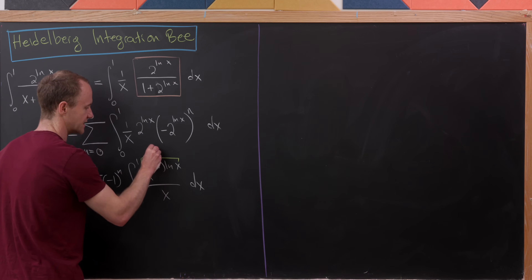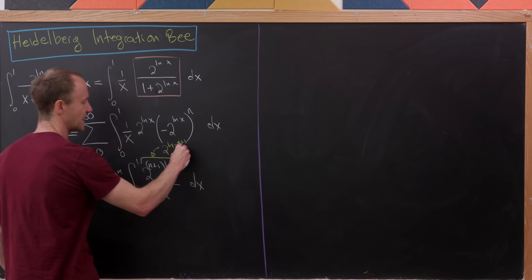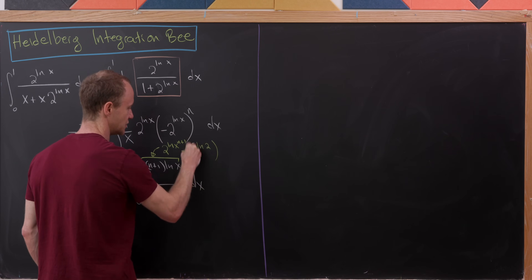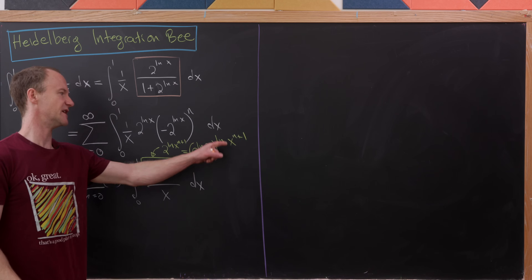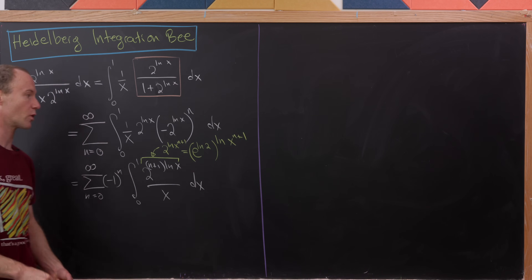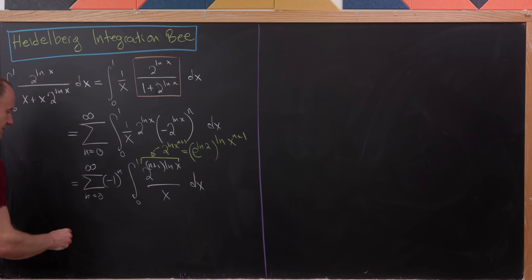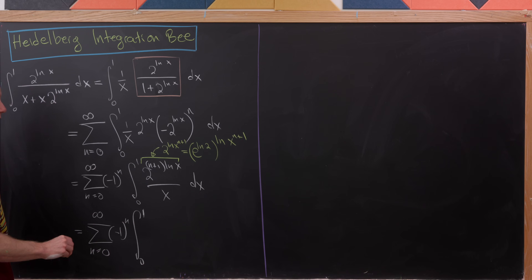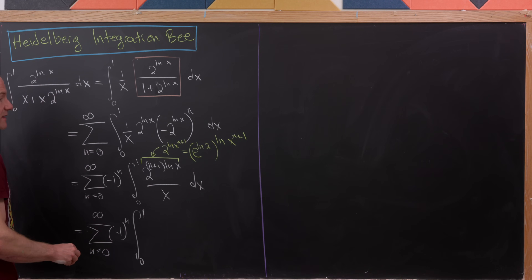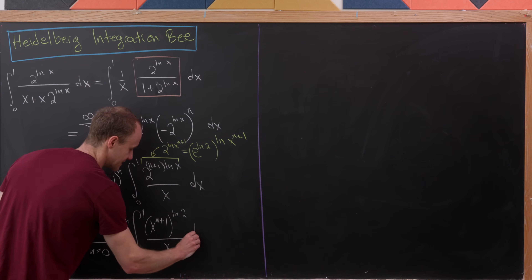Let's focus on the numerator of the integrand. This is 2 to the natural log of x, raised to the n plus 1. I can rewrite 2 as e to the natural log of 2, raised to the natural log of x to the n plus 1. Using the trick that we can switch the order of the exponents, that brings natural log of x to the n plus 1 inside and natural log of 2 outside. So we'll have e to the natural log of x to the n plus 1, which simply gives us x to the n plus 1, raised to the natural log of 2, all over x.